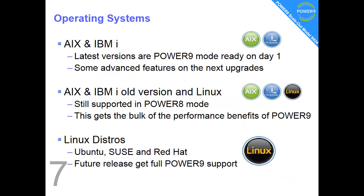Fact number seven: AIX and IBM i, the very latest versions, support Power9 from day one. Some advanced features of the processor will have to wait for operating system upgrades for full support. The older versions of AIX, IBM i and Linux will still be supported in Power8 mode on the Power9 processor, and you still get the full performance benefits of the Power9 processor.